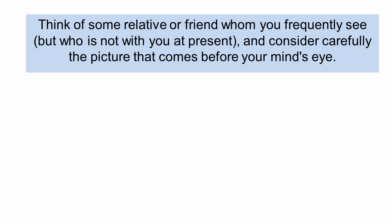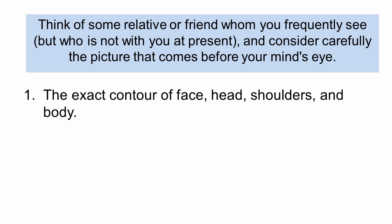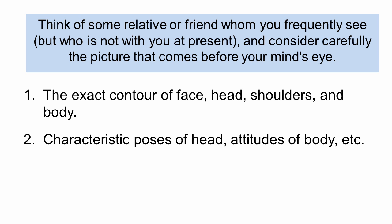For the first four items, pick a friend or relative you're very familiar with who isn't with you right now. First, imagine as vividly as you can the exact contour of their face, head, shoulders, and body. Second, try to imagine their characteristic poses — how they hold themselves, whether they slouch or stand up straight. Third, imagine your friend walking: how they move, the length of their step, how fast they walk. Fourth, imagine the stereotypical clothes the person wears and the colors you tend to see them wearing.